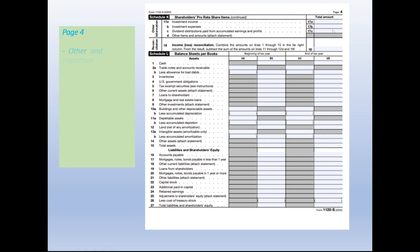On page 4, starting at line 18, is the continuation of Schedule K. The number on line 18 represents the total income for the year — passive income plus ordinary income combined. That income is then allocated to each shareholder according to their ownership percentage and passed on to their individual tax returns. The shareholder pays tax on that income, not the S Corporation.